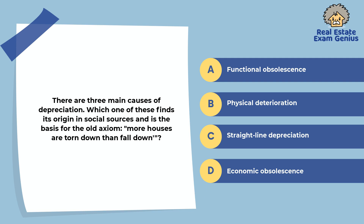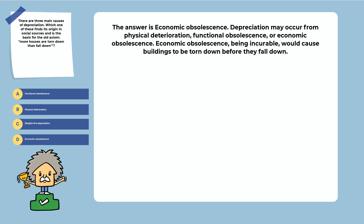There are three main causes of depreciation. Which one finds its origin in social sources and is the basis for the axiom 'More houses are torn down than fall down'? Functional obsolescence, physical deterioration, straight-line depreciation, or economic obsolescence. The answer is economic obsolescence. Depreciation may occur from physical deterioration, functional obsolescence, or economic obsolescence. Economic obsolescence, being incurable, would cause buildings to be torn down before they fall down.